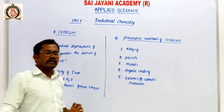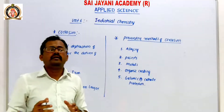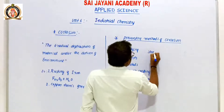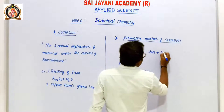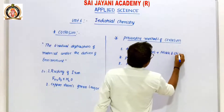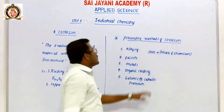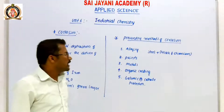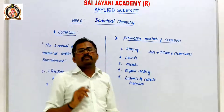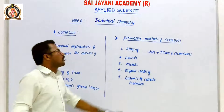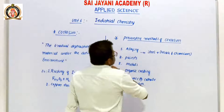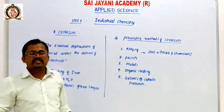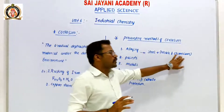Preventive methods for corrosion. First one: Alloying. Alloying means the material is made corrosion-resistant. For example, steel plus nickel and chromium — nickel and chromium are added so that steel becomes corrosion resistant. For example, HSS, High-Speed Steel, uses steel alloys with added chromium and nickel, making it corrosion resistant.